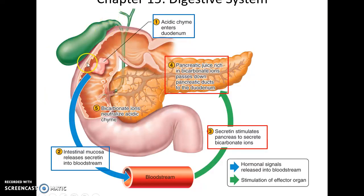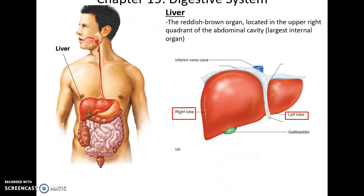Gastric contents enter the duodenum, causing secretin to be released into the bloodstream. It reaches the pancreas, causing the pancreas to release bicarbonate ions to neutralize the acid.